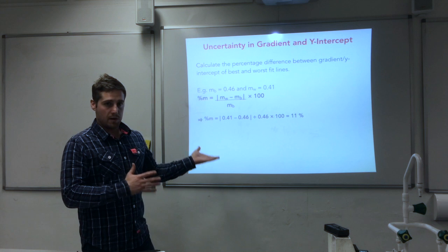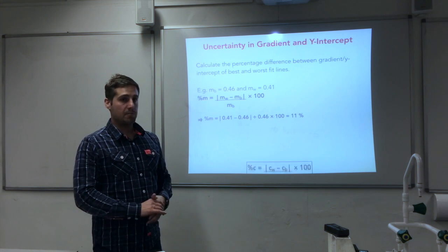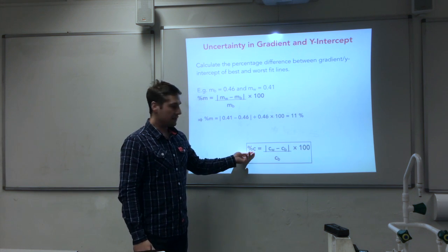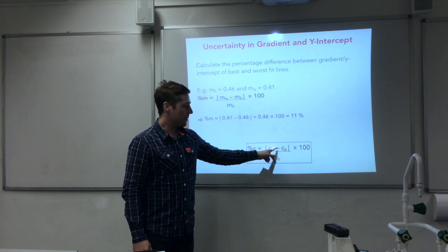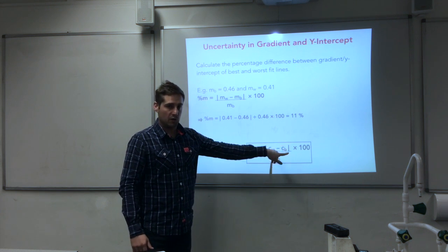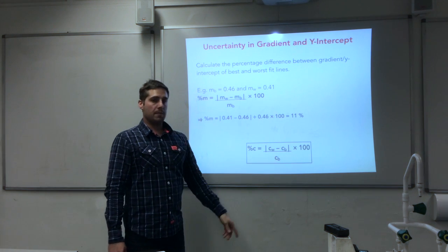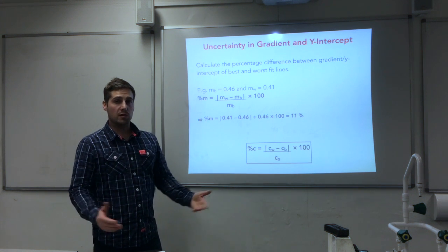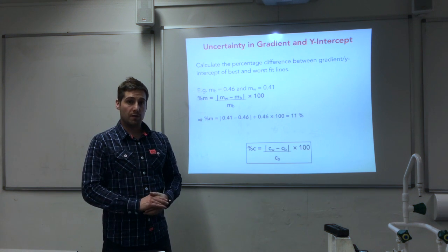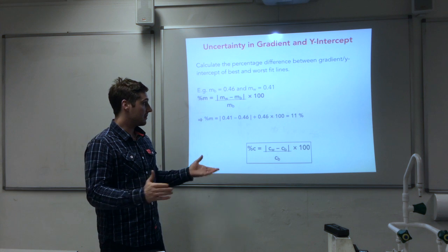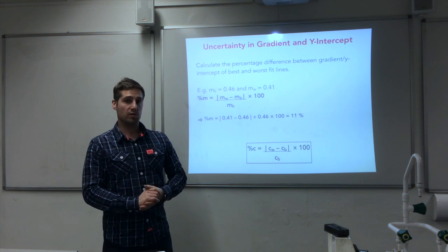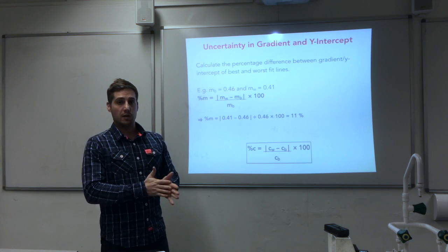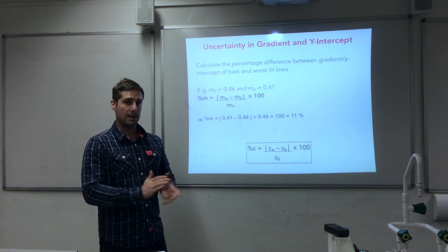We're taking the modulus, so it doesn't matter which way around you do the worst and best fit, but you must divide by the gradient of the best fit. We're only interested in magnitude, which gives us 11%. So the percentage uncertainty for this data would be 11%. If you're doing the y-intercept, it's exactly the same procedure — you're just using y-intercept values. The uncertainty in the y-intercept is the modulus of (worst minus best) divided by the best, multiplied by 100. And that's how you quantify uncertainty in graphs.